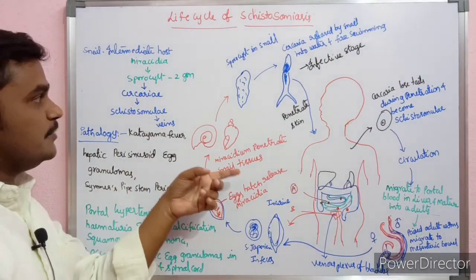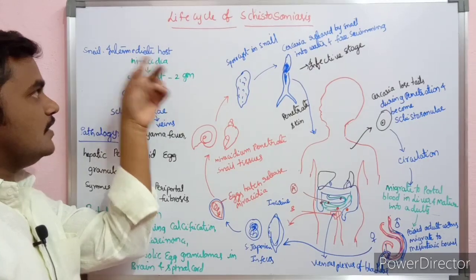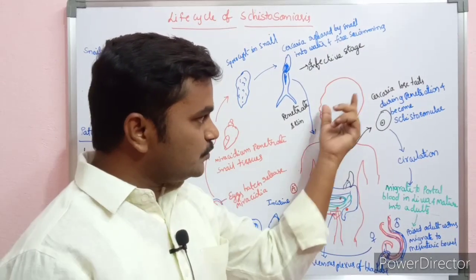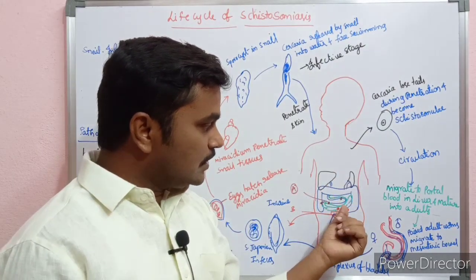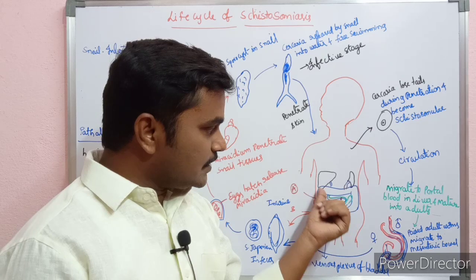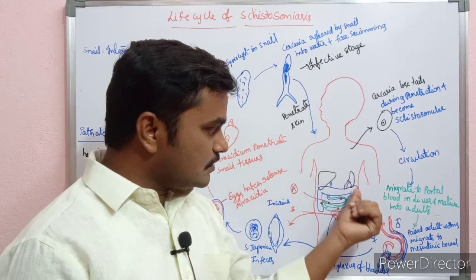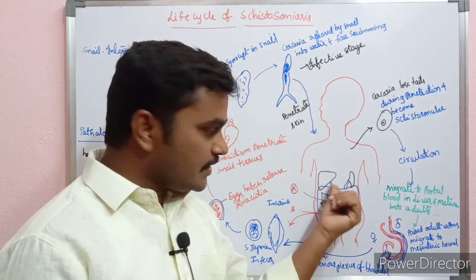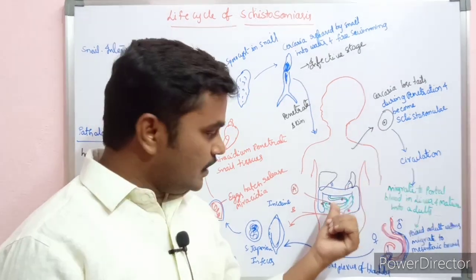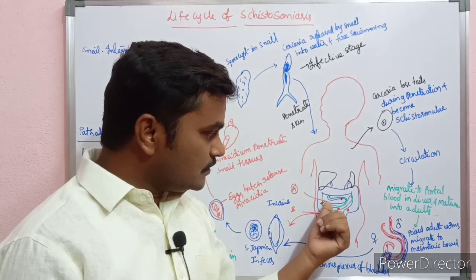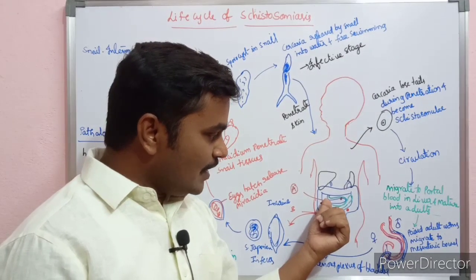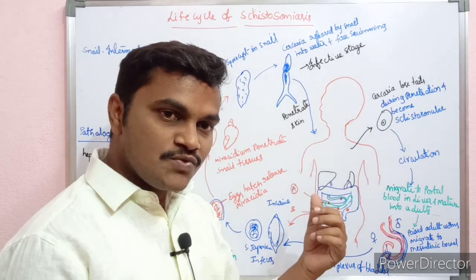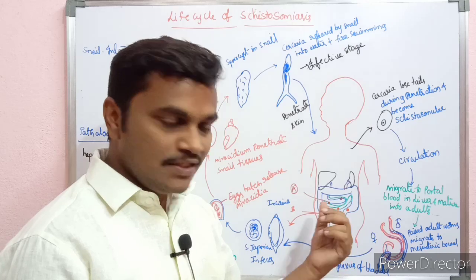Human beings are the definitive host, and snail is the intermediate host. There is an intestinal region and liver involved. The first location is the viscera, where male and female adult schistosomes are found.